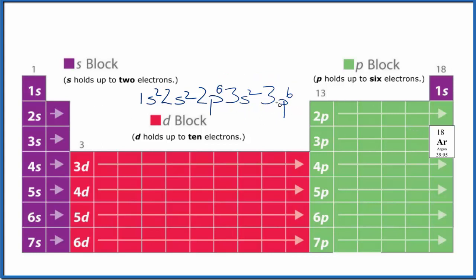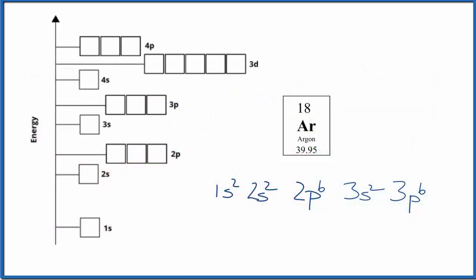Now that we have the electron configuration, let's write the atomic orbital diagram for argon. This is the atomic orbital diagram for argon. Both of these things show where the electrons are in relationship to the nucleus of the argon atom.